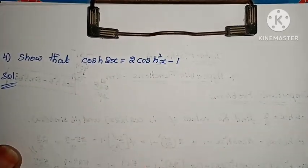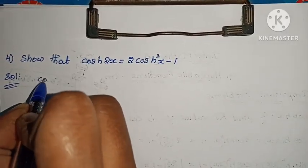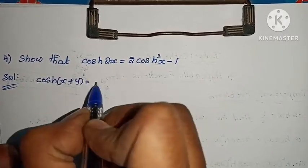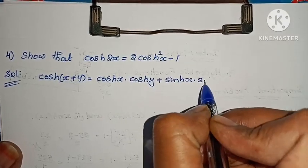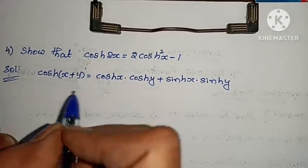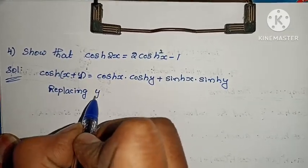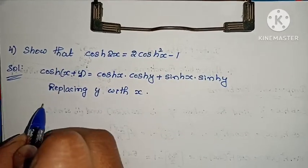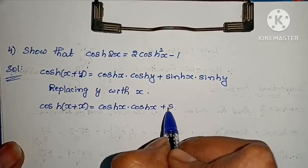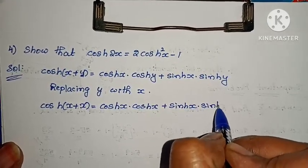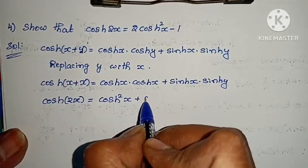LHS = cosh(2x). Using the addition formula — similar to cos(a+b) = cos(a)cos(b) + sin(a)sin(b) — the hyperbolic version is: cosh(x + y) = cosh(x)cosh(y) + sinh(x)sinh(y). Here 2x = x + x, so replace y with x. Then: cosh(x + x) = cosh(x)·cosh(x) + sinh(x)·sinh(x) = cosh²(x) + sinh²(x).